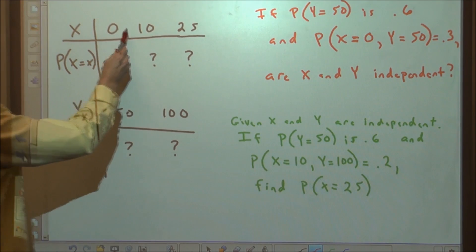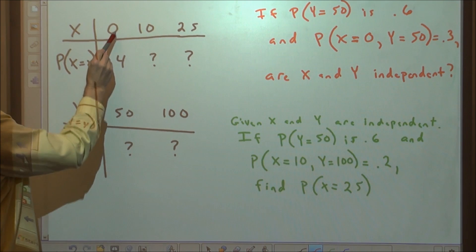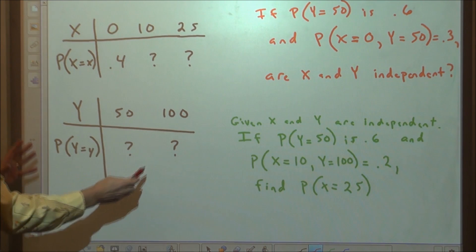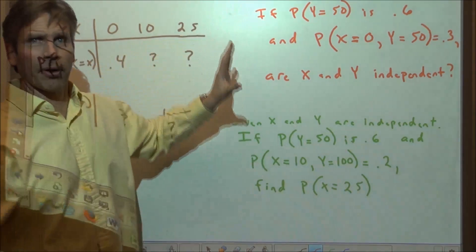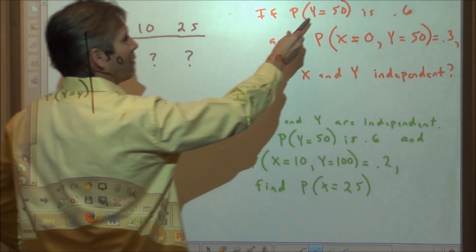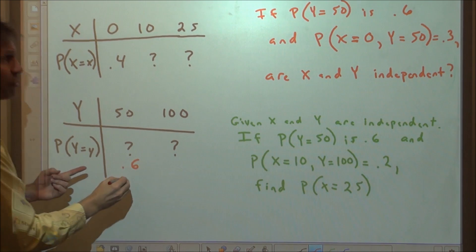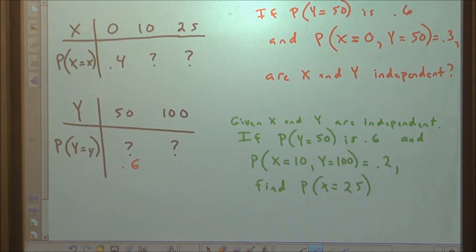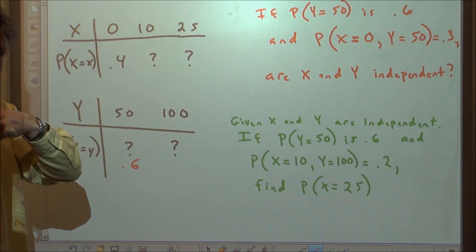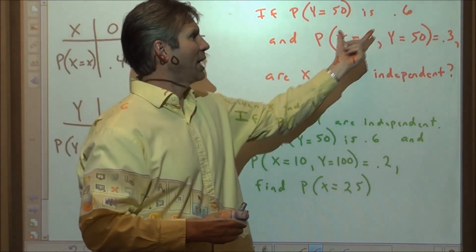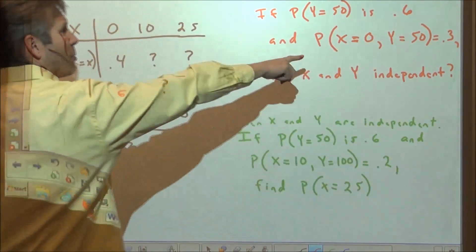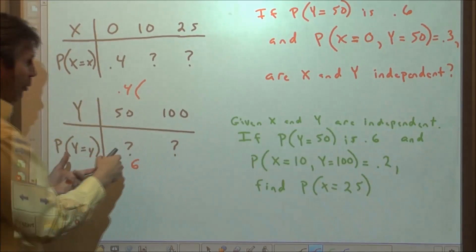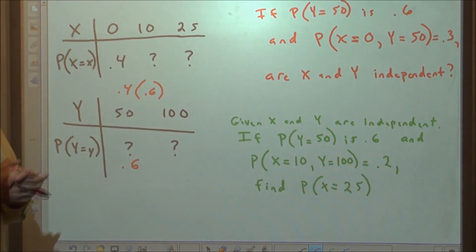Now consider this problem: random variable X can take values with only one probability known — say P(X=0) = 0.4 — and random variable Y with unknown probabilities. We're told P(Y=50) = 0.6 and the joint probability P(X=0 and Y=50) = 0.3. Are X and Y independent? If independent, we multiply: 0.4 × 0.6 = 0.24, which does not equal 0.3.